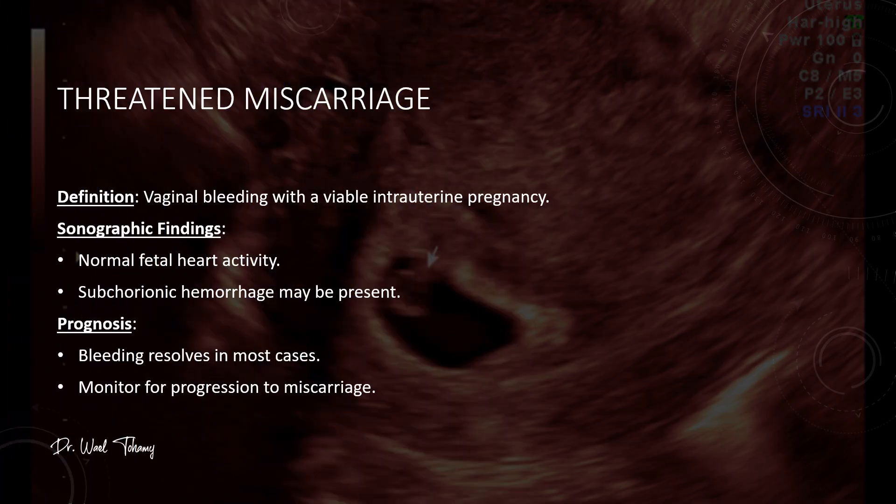Not all pregnancy bleeding means a loss. Threatened miscarriage is when there is vaginal bleeding but the pregnancy is still viable. On ultrasound, you will see normal fetal heart activity and sometimes a subchorionic hematoma. In most cases, the bleeding settles and the pregnancy continues, but close monitoring is important because some cases may progress to miscarriage.